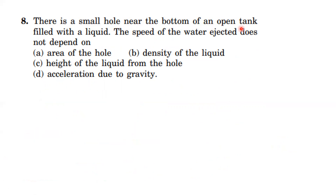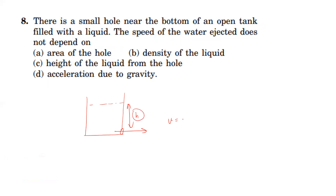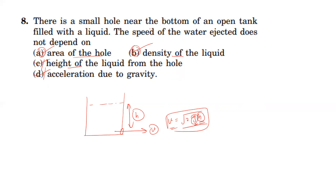Last question: there is a small hole near the bottom of an open tank filled with liquid. The speed of the liquid ejected does not depend on temperature. The velocity of liquid coming out is given by Torricelli's theorem: v equals root of 2gh, where h is the depth of the hole from the surface. The speed depends on the height h but is independent of the density of the liquid and the area of the hole. So options A and B are independent for the speed.